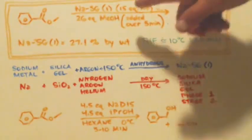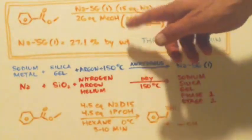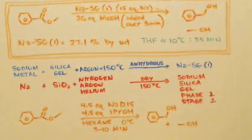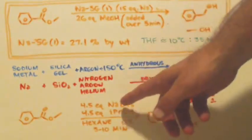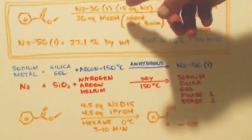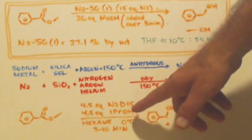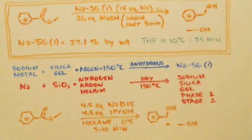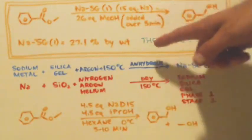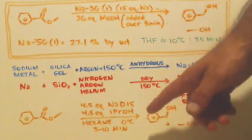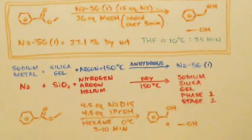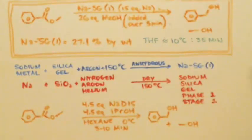Now, why does this use 15 equivalents of sodium and methanol, and this only uses 4.5? I don't know. Is it because the sodium D15 is a lot better than the sodium silica gel up here? Or, is the isopropanol a better proton donor than the methanol is? I don't know. I doubt very likely it has anything to do with the solvent. If I had to pick between THF, diethyl ether, or hexane, I would pick hexane.